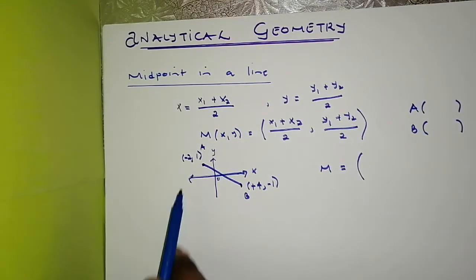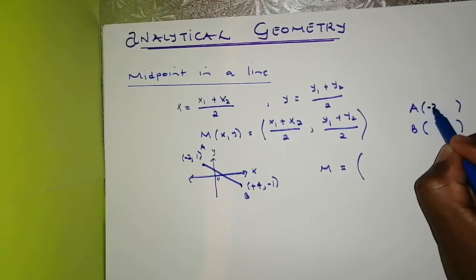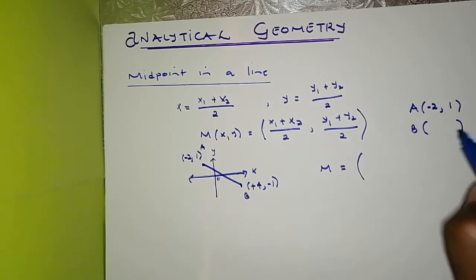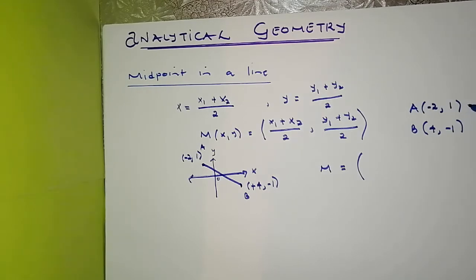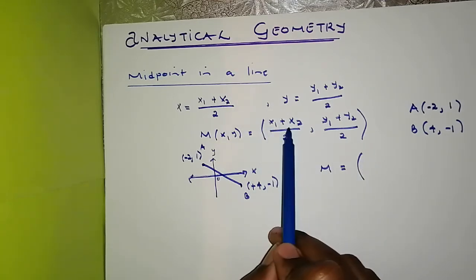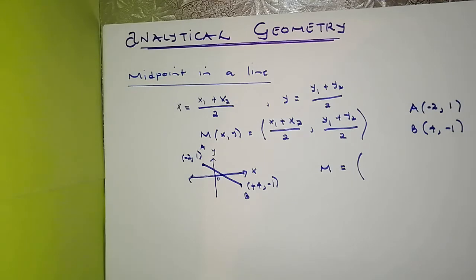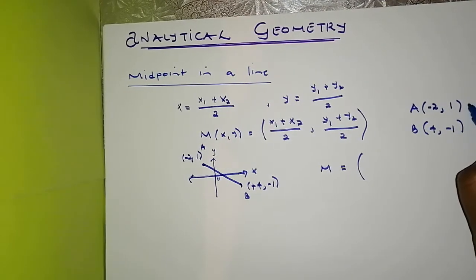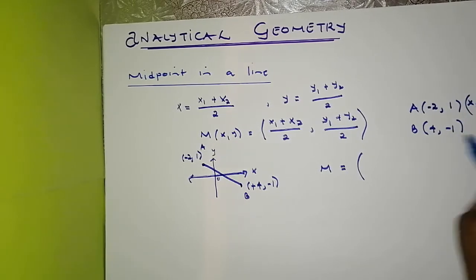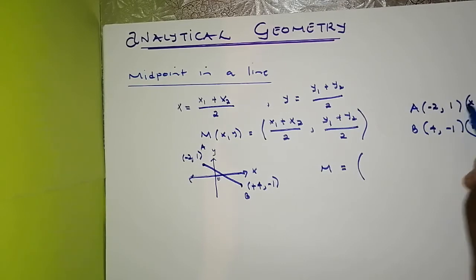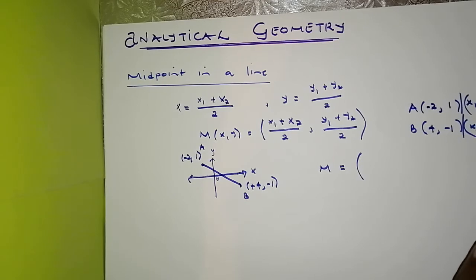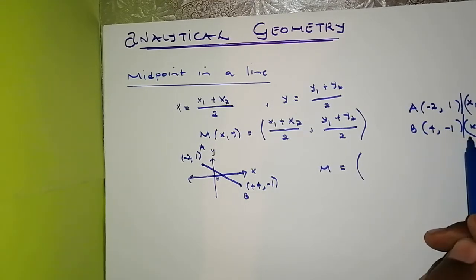The midpoint, denoted M, will be calculated from: coordinates of A are (−2, 1) and coordinates of B are (4, −1). We can call A as (x1, y1) and B as (x2, y2) — whichever way you assign them will give you the same answer. Let's say A is (x1, y1) and B is (x2, y2), and we insert these into the formula.